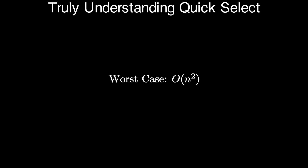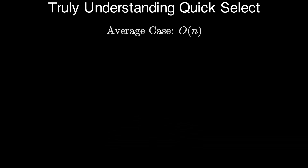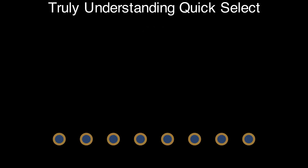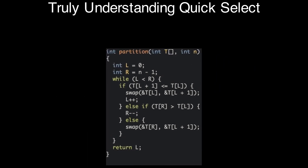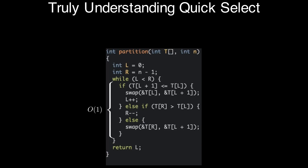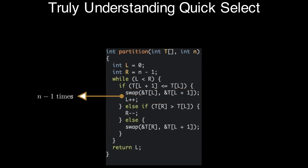In the worst case, QuickSelect has a time complexity of O(n²). However, on average, QuickSelect takes time O(n), which is faster than simply sorting the array and then returning the element on position k. To understand the running time of the partition function: the running time is dominated by the while loop, and as each iteration takes constant time, the running time is proportional to the number of iterations. The first branch, where l is incremented, can be taken at most n-1 times, because l starts at 0 and after at most n-1 increments it will hit n-1, at which point the while loop condition is surely false.